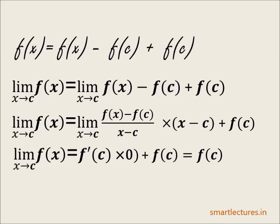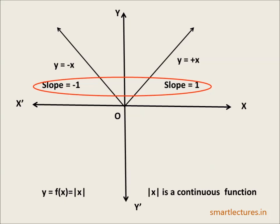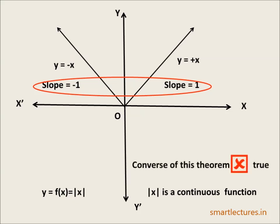Now let's check whether the converse of this theorem is also true — that is, if a function is continuous at a point, is it also differentiable there? We already discussed that the modulus function f(x) = |x| is continuous but not differentiable at x = 0. This clearly means a function may be continuous at a point but is not necessarily differentiable at that point, so the converse of this theorem is not true.